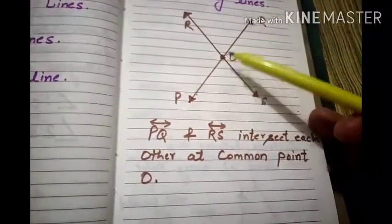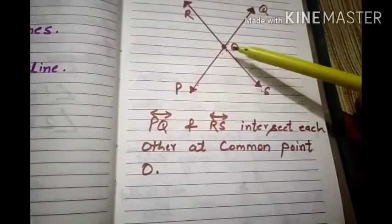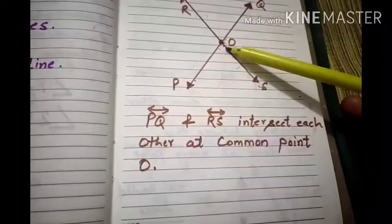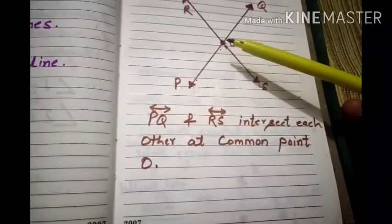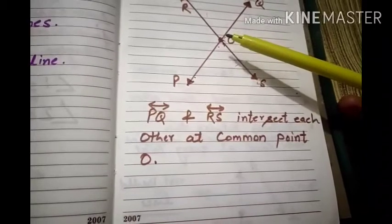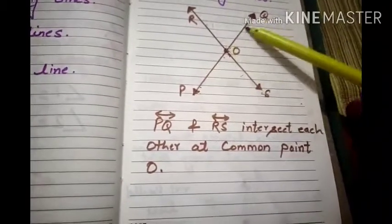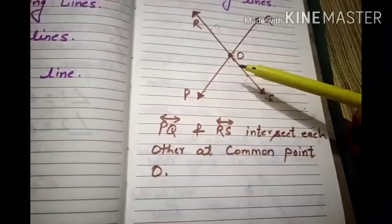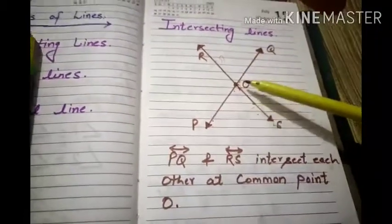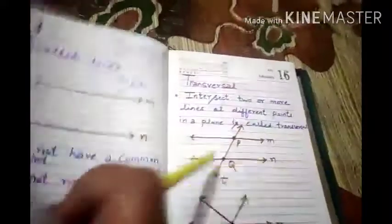Because line PQ passes through point O, and line RS also passes through point O. So O is the common point, and that common point is also known as the point of intersection. So the two lines PQ and RS intersect each other at point O. These two lines have a common point, so they are intersecting lines.